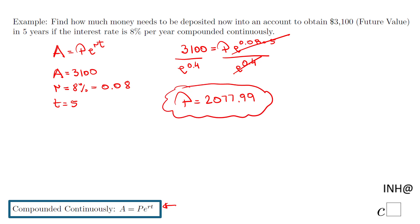So in order to have $3,100 in five years at a rate of 8% per year compounded continuously, we need to deposit $2,077.99. And like I said, this is also called future value. You may hear future value in your classes, and that is the meaning, future value.